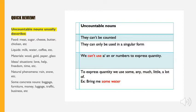So uncountable nouns are used to describe food like meat, sugar, cheese, butter; liquids like milk, water, coffee; materials like wool, gold, paper, glass; ideas or situations, natural phenomena, and some concrete nouns such as baggage, furniture, money, luggage, traffic, and business.